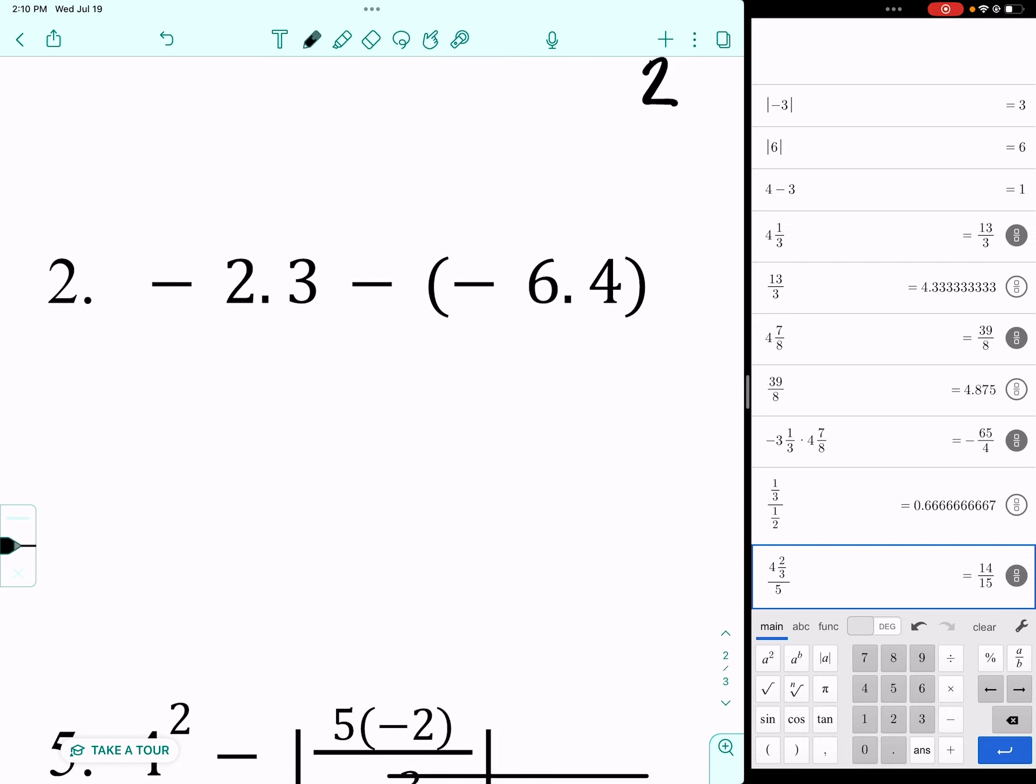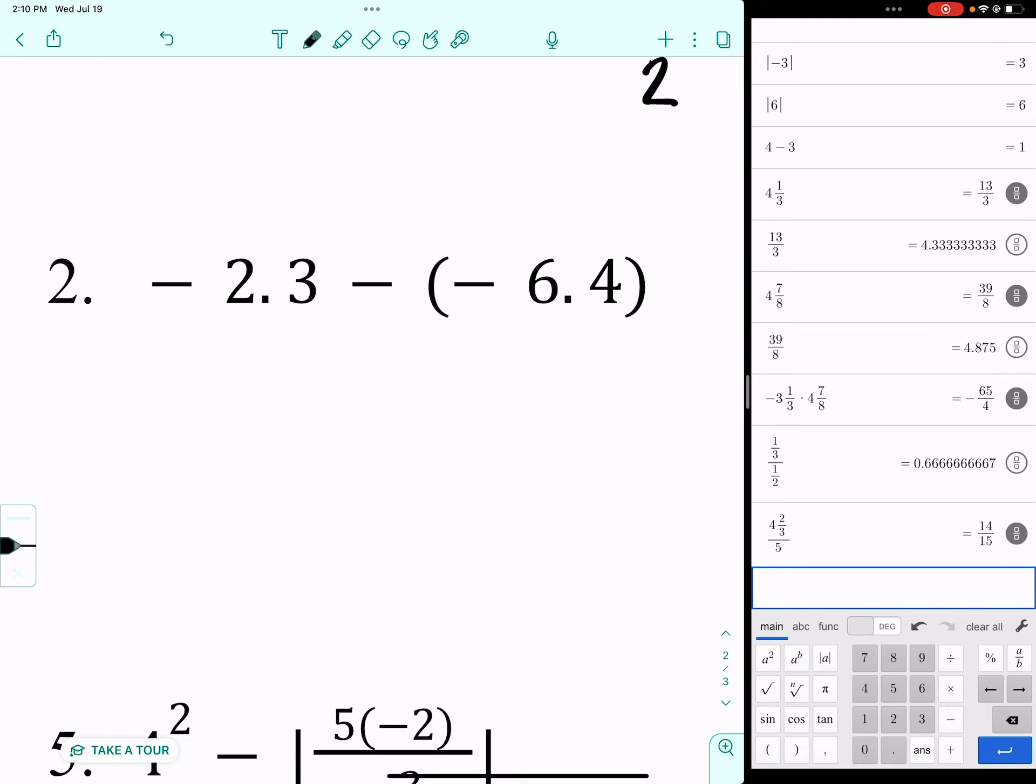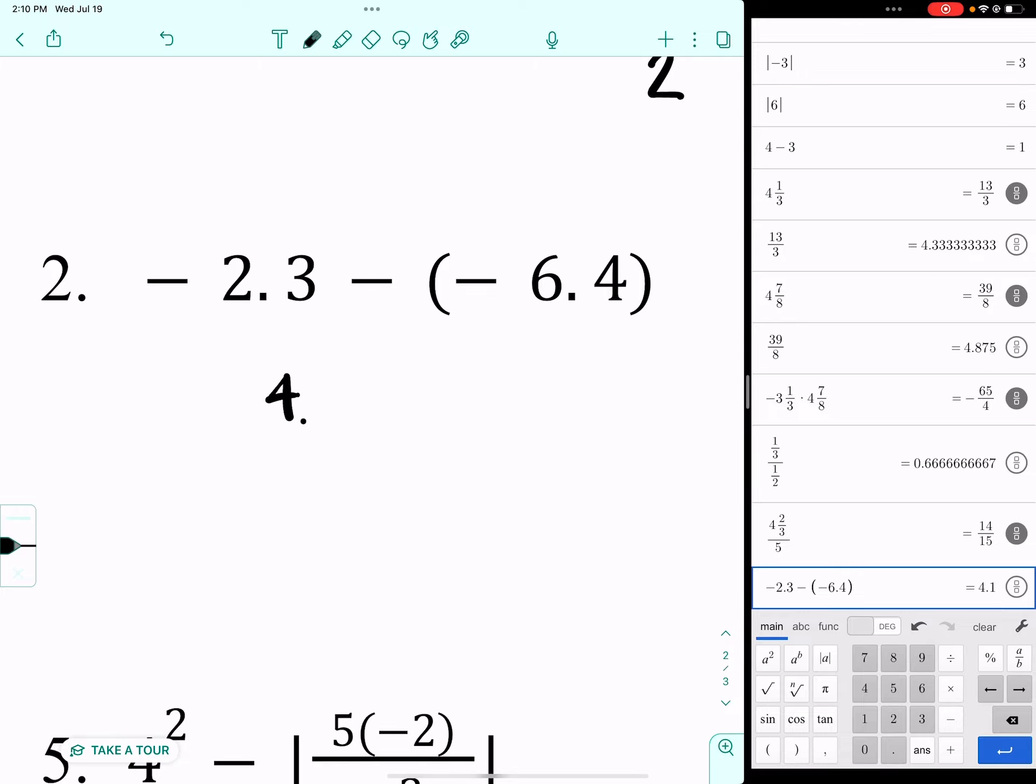For two, do you need the parentheses? I want you to use them so it becomes a habit. If I put in negative 2.3, minus, your parentheses are in the bottom left corner of your keyboard for the calculator, negative 6.4. So I get a 4.1.